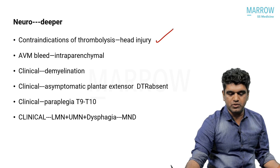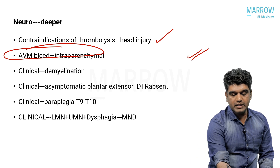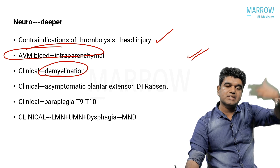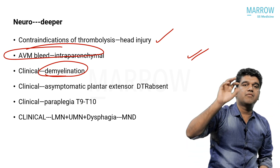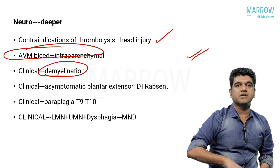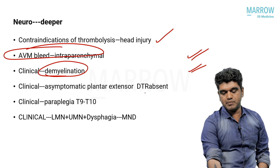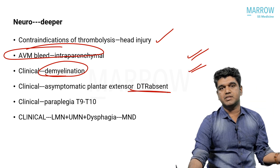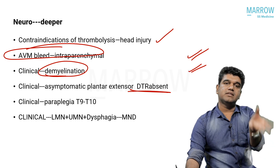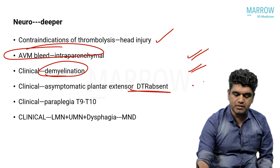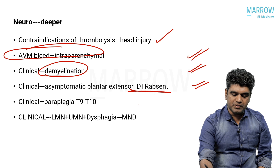In neurology, contraindications to thrombolysis — everybody would have answered head injury; you don't need a neurology video for that. Avium bleed as intraparenchymal — something Bashek has stressed many times. Clinical question on demyelination — patient with vision loss and complete recovery — if you see his videos, he keeps repeating that complete recovery after visual loss is demyelination. Asymptomatic plantar extensor with DTR absent was a tough question — many thought B12 deficiency — but in that setting, MND is the answer.